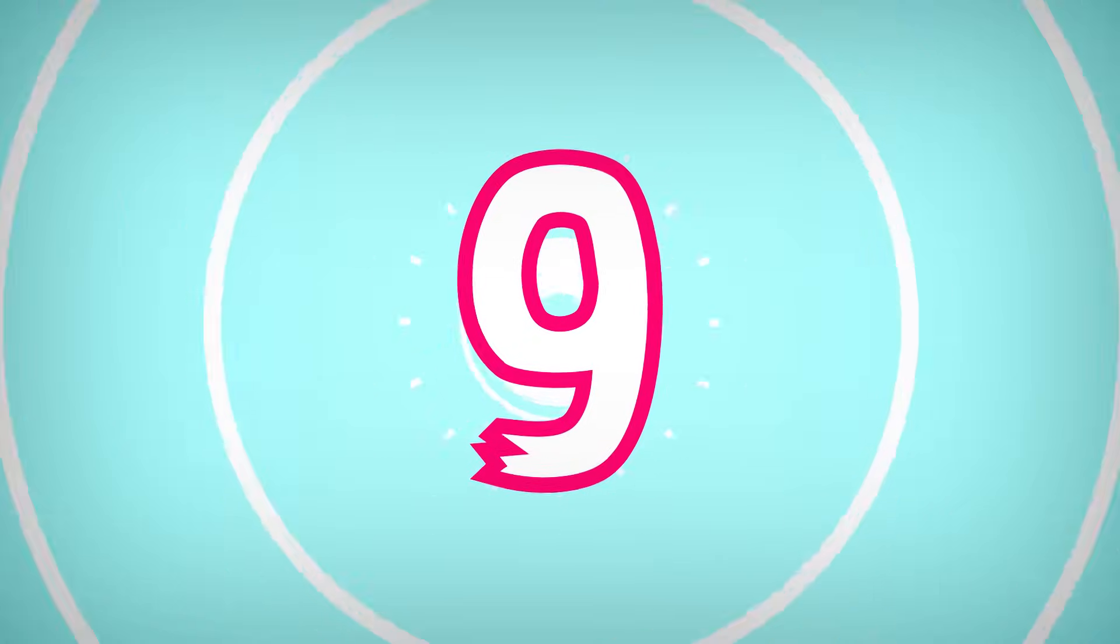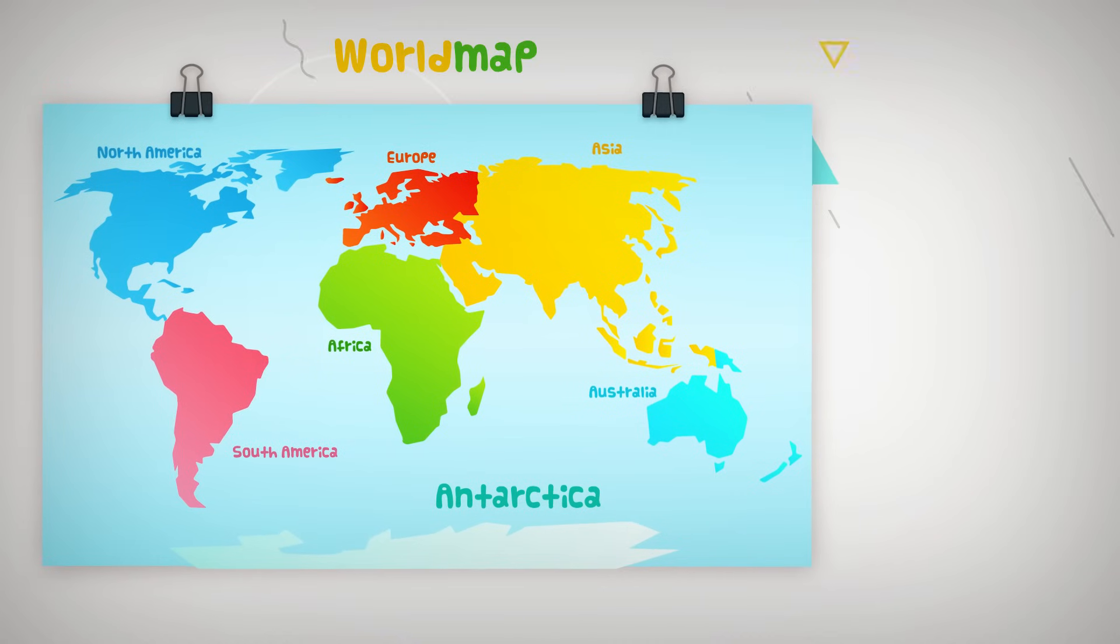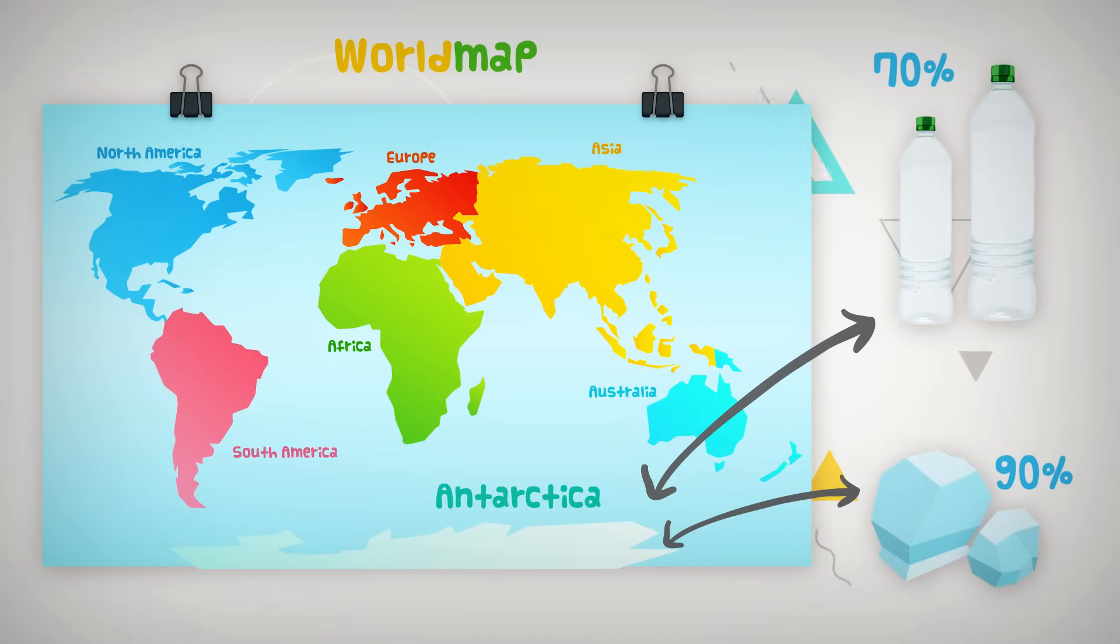Number 9. Did you know that Antarctica contains 70% of the world's drinkable water? It also has 90% of the Earth's ice.